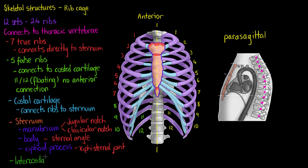The last feature we're going to look at is our intercostal spaces — not actually part of any structure, but referring to the space between our ribs. There will be muscles within these spaces called our intercostals.